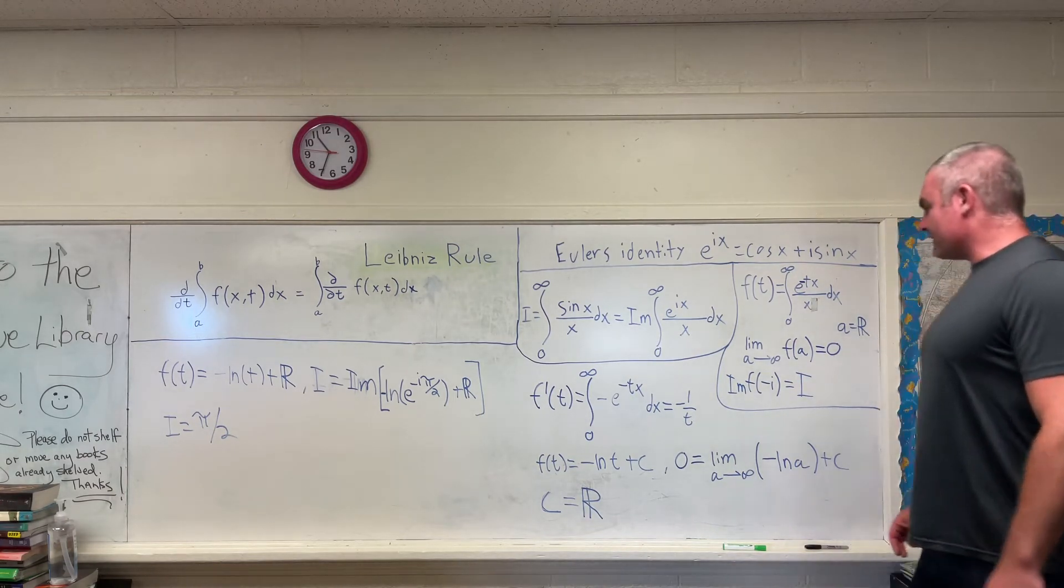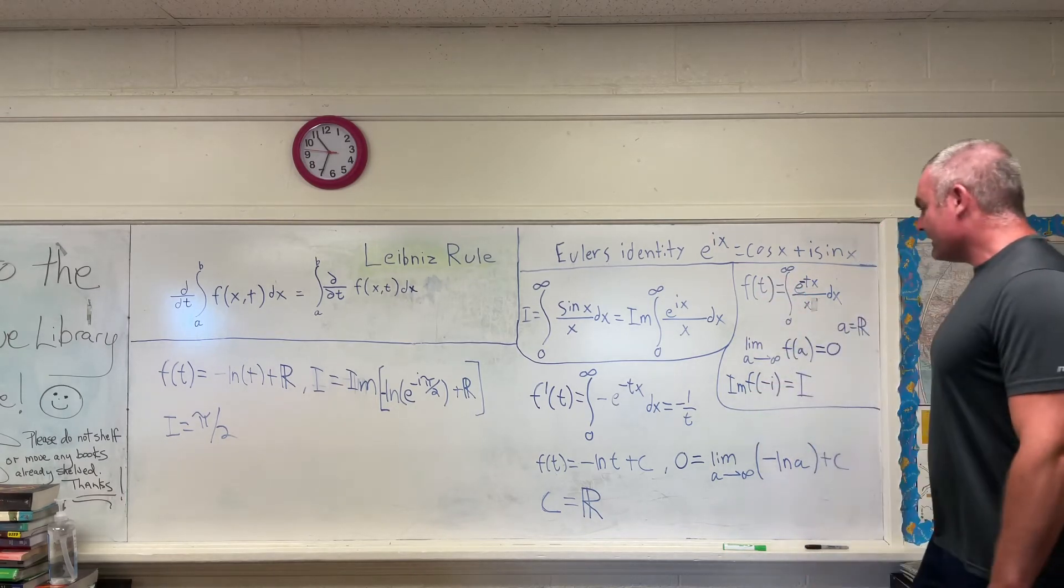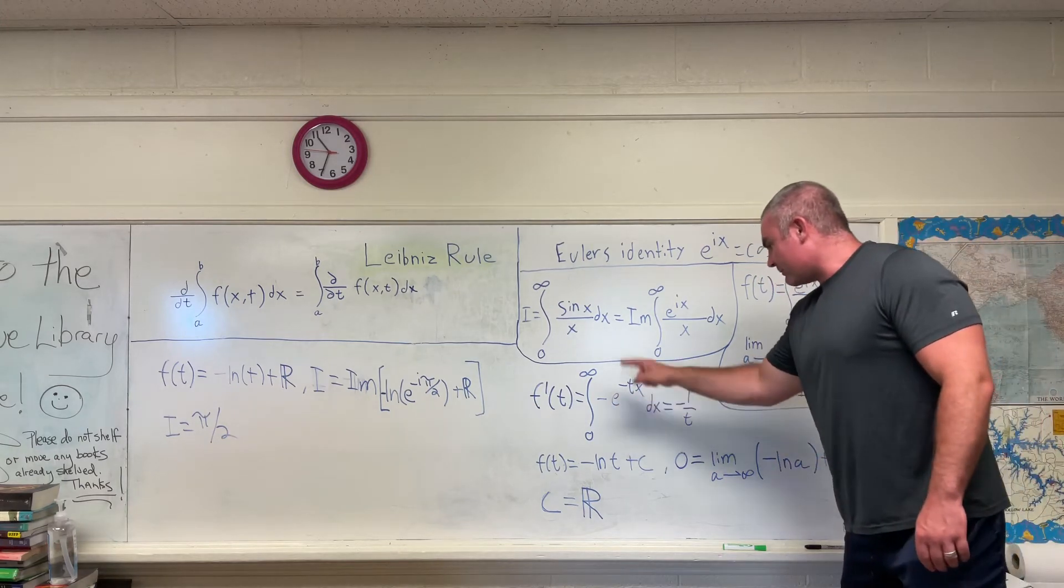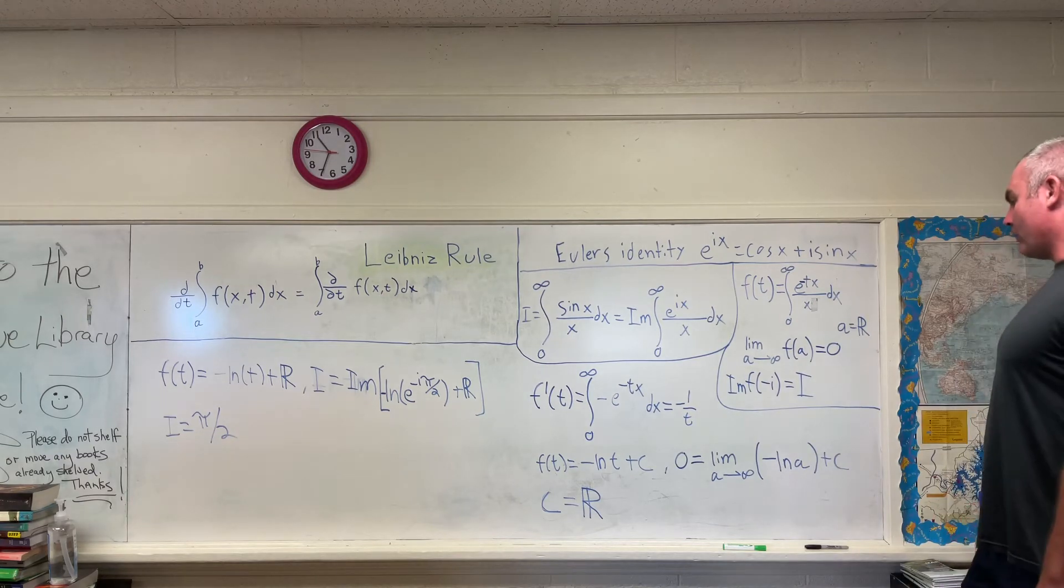Okay, so the next step is familiar. We're going to be taking the derivative of f of t. And when you do, you get this, which is 0 to infinity, negative e to the negative tx dx, which is equal to negative 1 over t.